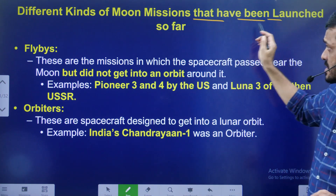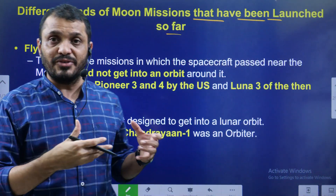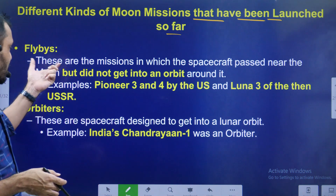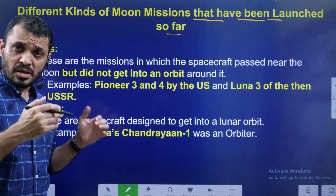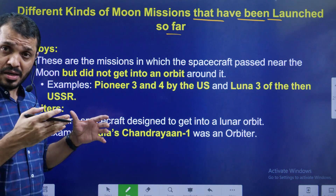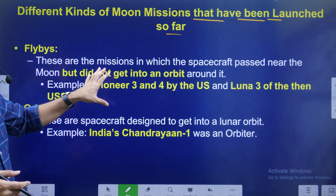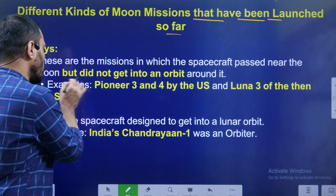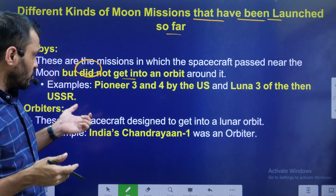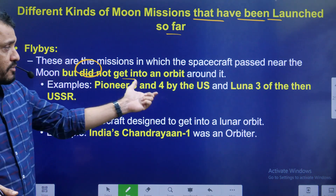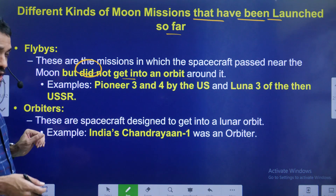What are the different types of missions generally used towards the moon? Number one: Flybys — they fly past the moon, don't land or hit the moon's surface, and don't enter into the moon's orbit. Examples are Pioneer 3 and 4 of the USA, and Luna 3 of the USSR.